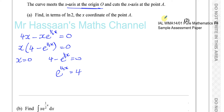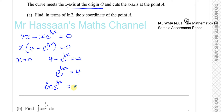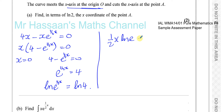The ln button means log to the base of the natural number e. Using the power rule, we can write this as a half x times ln(e) equals ln4. We know that ln(e) equals 1, because log base a of a always equals 1 — since a to the power of 1 equals a. So we can simplify to a half x equals ln4.